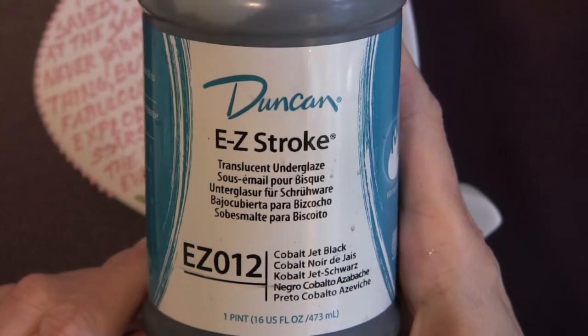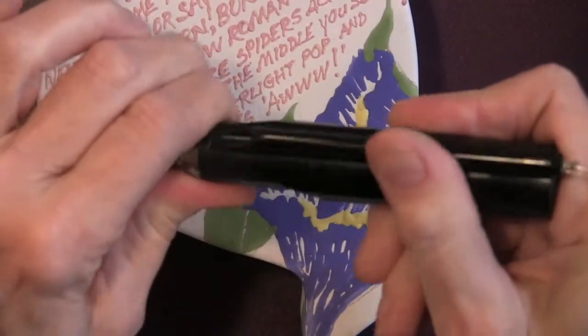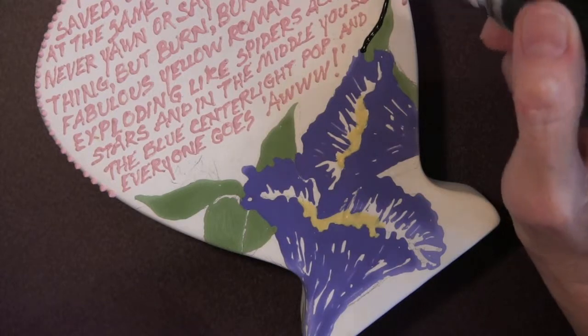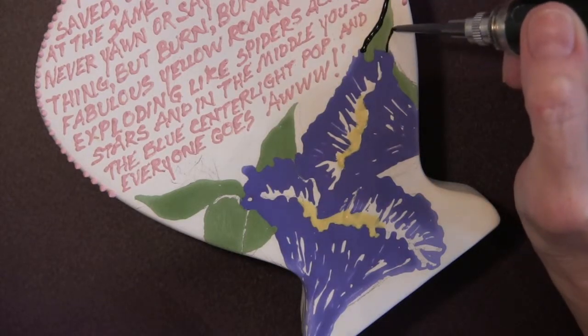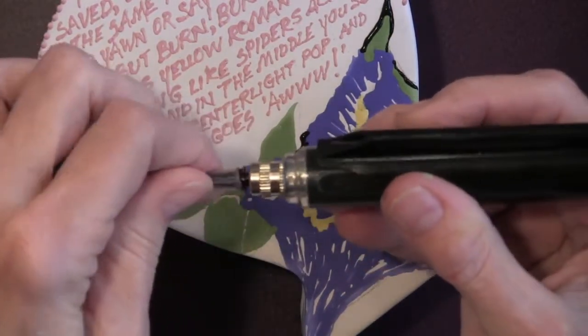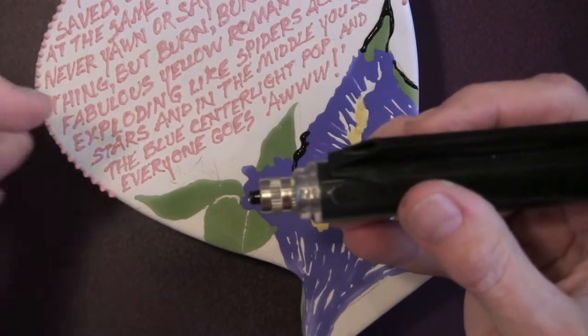Here's a product I found several different uses for called Easy Stroke by Duncan. It's a glaze that you can use for one application. It flows a little faster than some of the others so I'm going to put a smaller tip on.